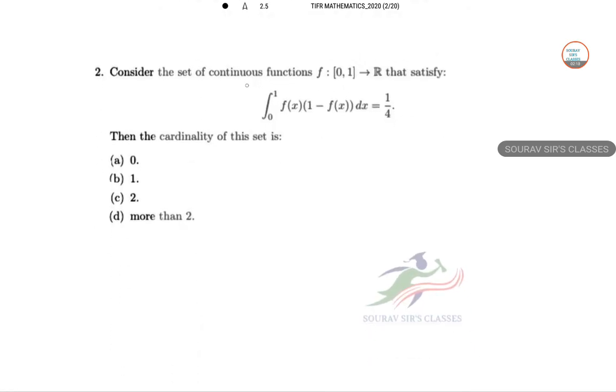Consider a set of continuous functions f: [0,1] → R that satisfy this. So the cardinality of the set, we have to find out the cardinality of the set. So f(x) is a continuous function such that f: [0,1] belongs to R. So let us calculate from this.